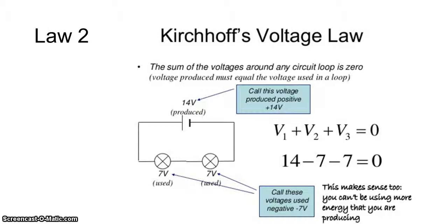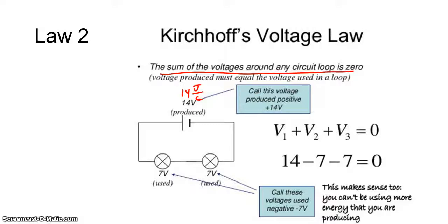The second law says the sum of the voltage around any closed loop is zero. Meaning I pick up 14 joules per coulomb at the battery, and by the time I get back to the battery, I need to have none of those 14 joules left over. So I can drop off 7 here and 7 here, or another option could be 10 here and 4 here.